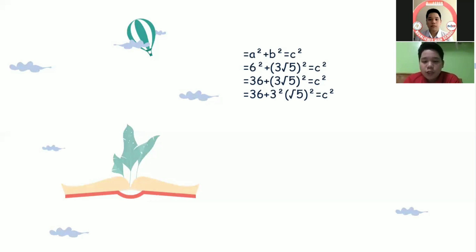And then we need to distribute the exponent over each factor in the term. In our case, the exponent 2 is distributed and will become 36 plus 3 squared times quantity square root of 5 squared equals c squared.